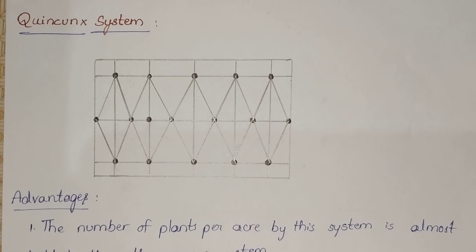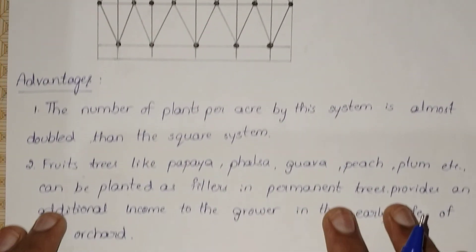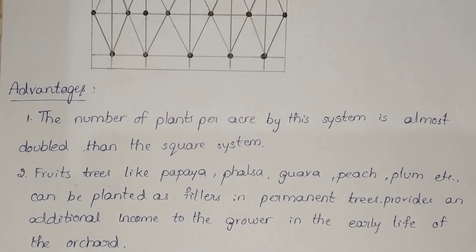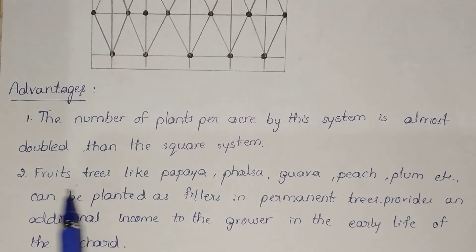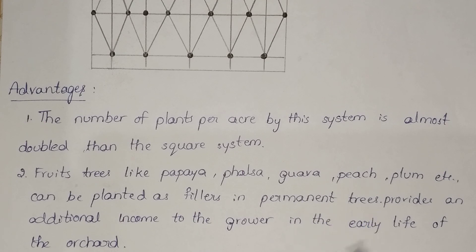Coming to the advantages: the number of plants per acre using this system is almost double that of the square system. Fruit trees like papaya, pulsa, goa, peach, and plum can be planted as fillers among permanent trees. This provides an additional income to the grove in the earlier life of the orchard.